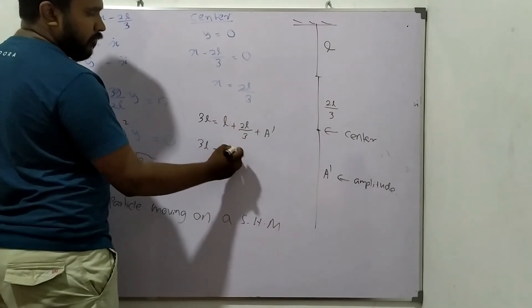And the next thing is amplitude, A dash. How to find the amplitude? You know, whole distance is 3L plus L. 3L equal L 2L over 3 plus amplitude. So 3L minus 5L over 3, A dash. So 9L minus 5, 4L over 3 amplitude.